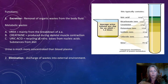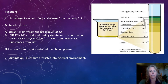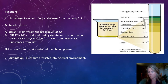A third metabolic waste is uric acid, which comes from the breakdown and recycling of our nitrogenous bases. Think of our nucleic acids and the nitrogenous bases that come from them. When we break down those nucleic acids, we get uric acid in the blood that needs to be filtered out by the kidneys. Urine is much more concentrated than blood.